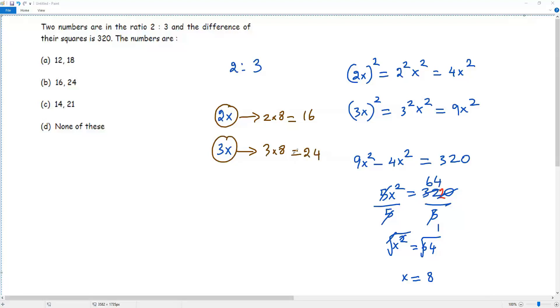So the two numbers are 16 and 24. The first number is 16. The second number is 24. The correct answer choice is option B.